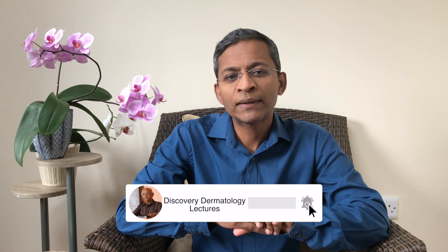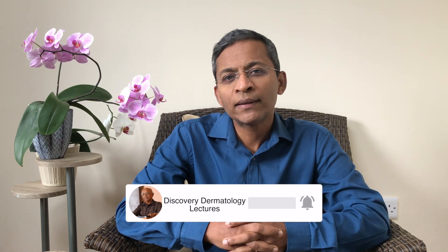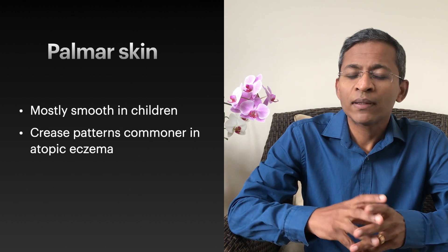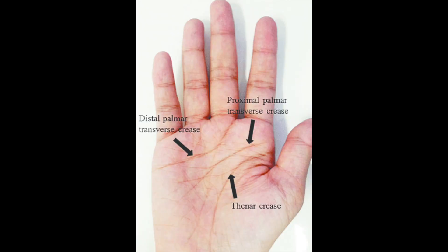Most children have smooth palmar skin but increased skin markings is found in about 75% of children who have atopic eczema, and the majority show a cross-shaped crease pattern. There are several other patterns as well and deep creases can also be seen in the palms and the fingers. It is important to note that similar changes can occur in the soles as well, particularly in children.